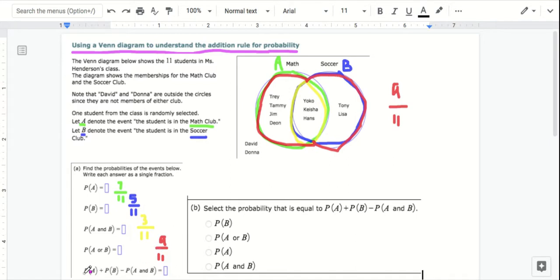Now let's look at this. We want to figure out what the probability of A plus the probability of B minus the probability of A and B. So probability of A is 7 elevenths. Probability of B is 5 elevenths. So we're adding those. And then we're subtracting the probability of A and B, which is 3 elevenths.